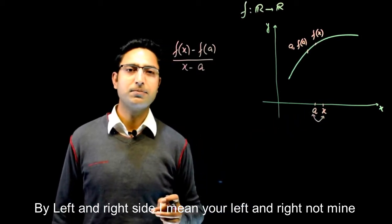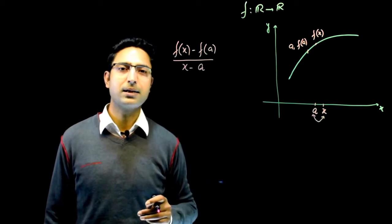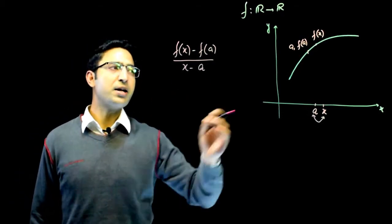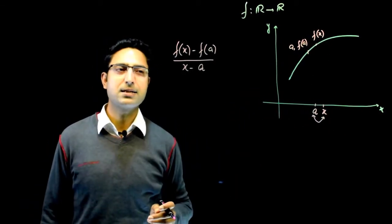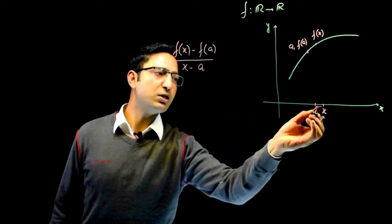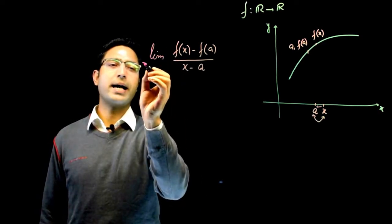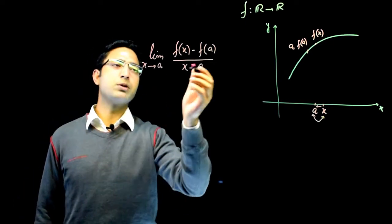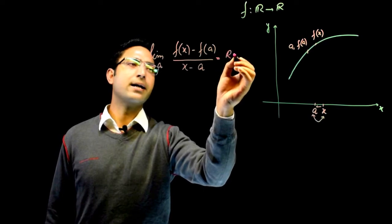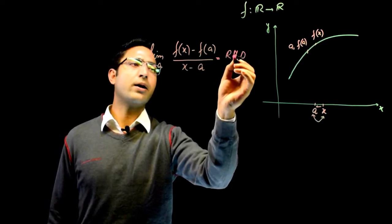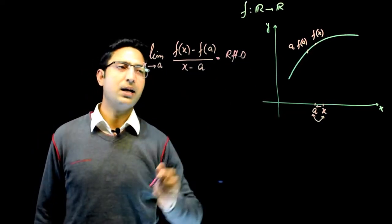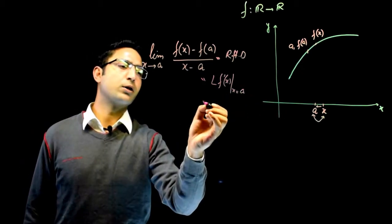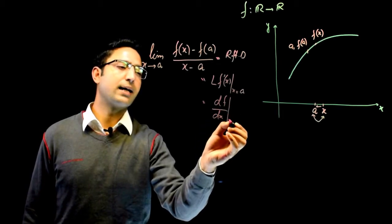I am taking the other point x to the right of a and looking at the function values at point a and at point x. I take the difference in f values and divide by the difference in x values — that means I am taking the rate of change of the function with respect to x. I do this when x is very close to a, that is, when the limit as x goes to a from the right (x → a⁺) exists finitely. This limit is called the right-hand derivative (RHD) of f at x = a, denoted f'(a) or df/dx at x = a.